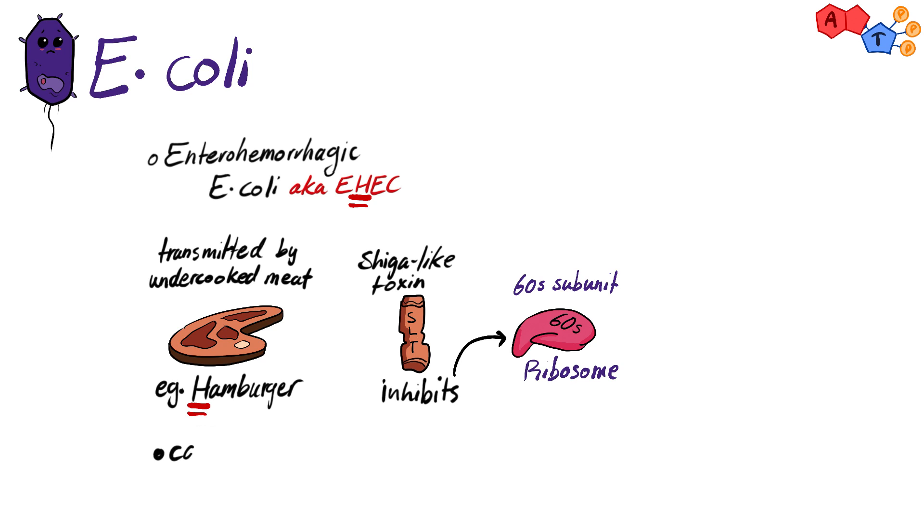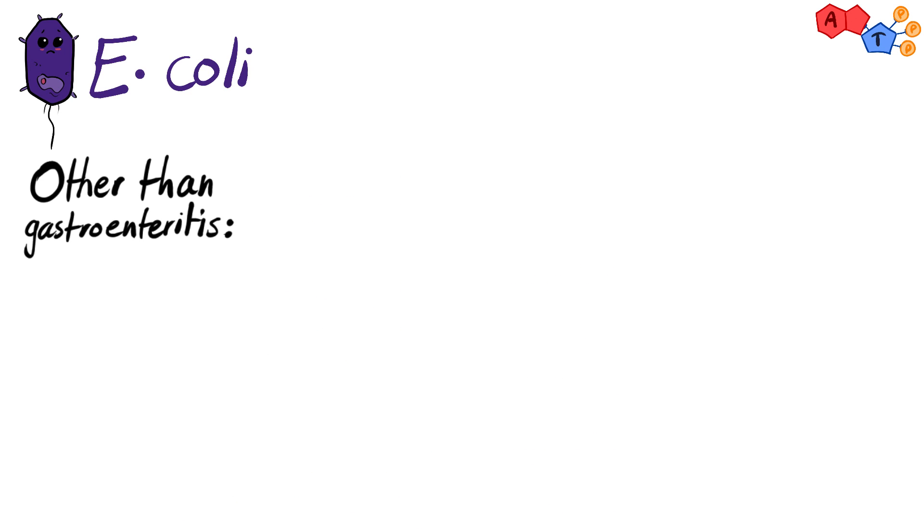And lastly, remember that EHEC can cause HUS, or hemolytic uremic syndrome. Other than gastroenteritis, E. coli can cause other diseases including UTI, urinary tract infection.